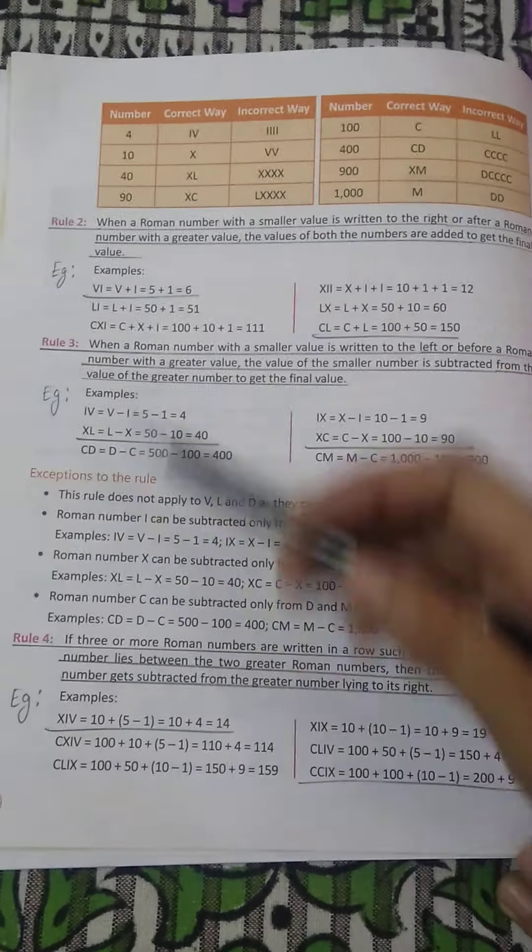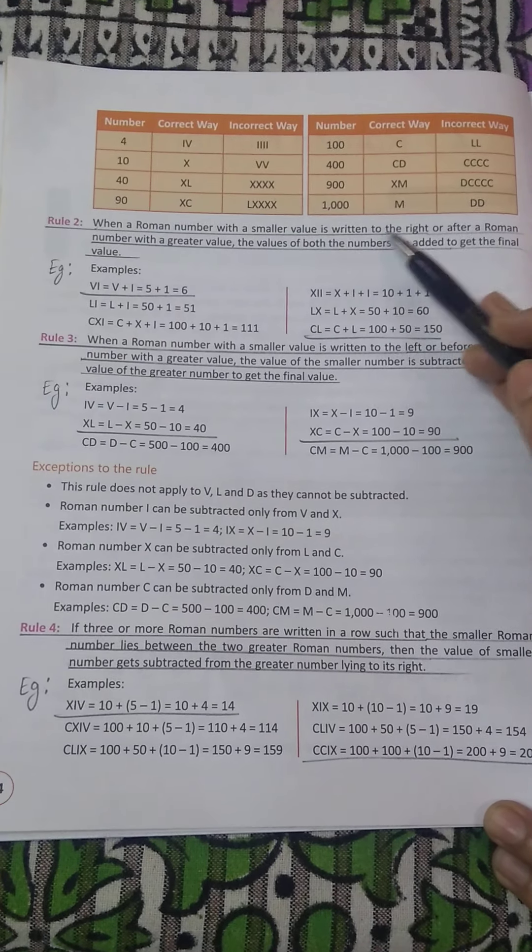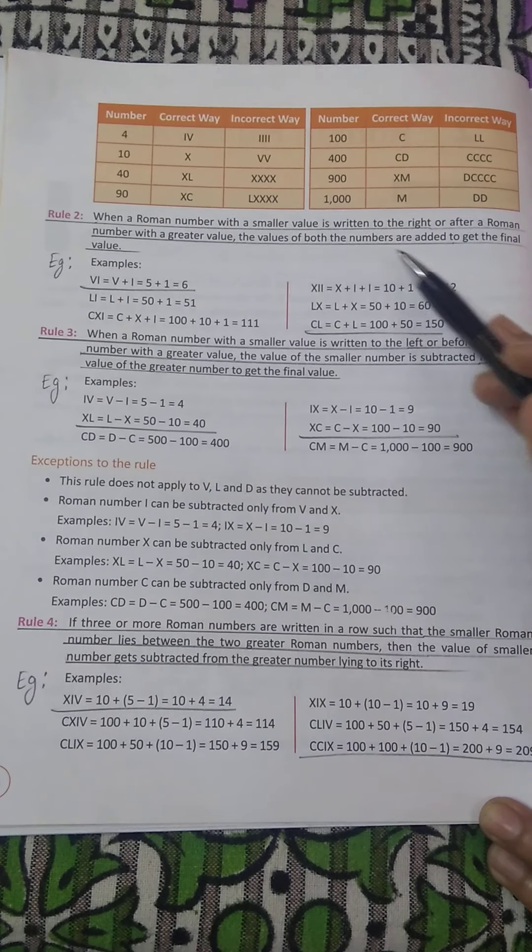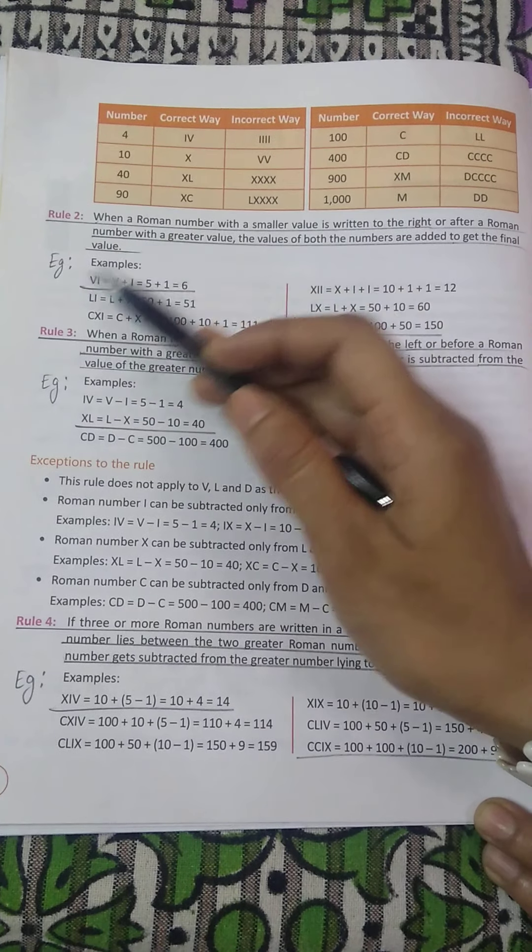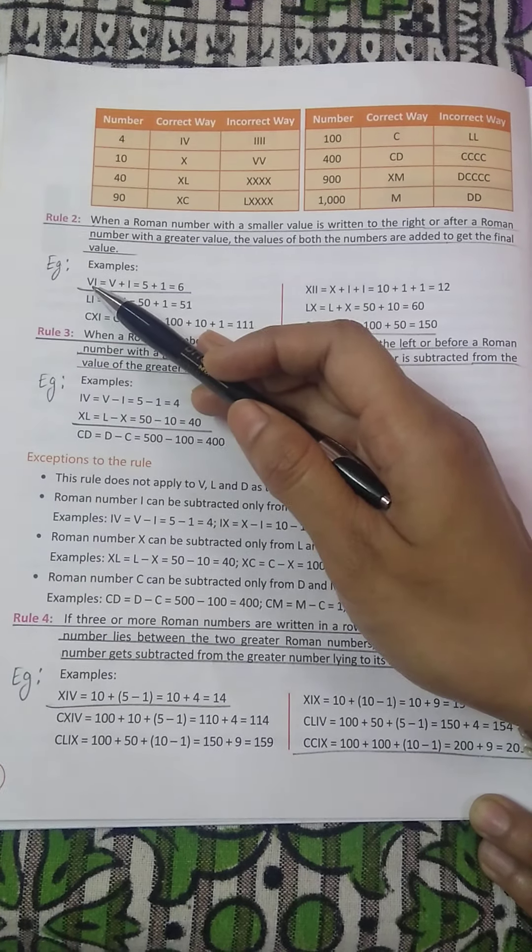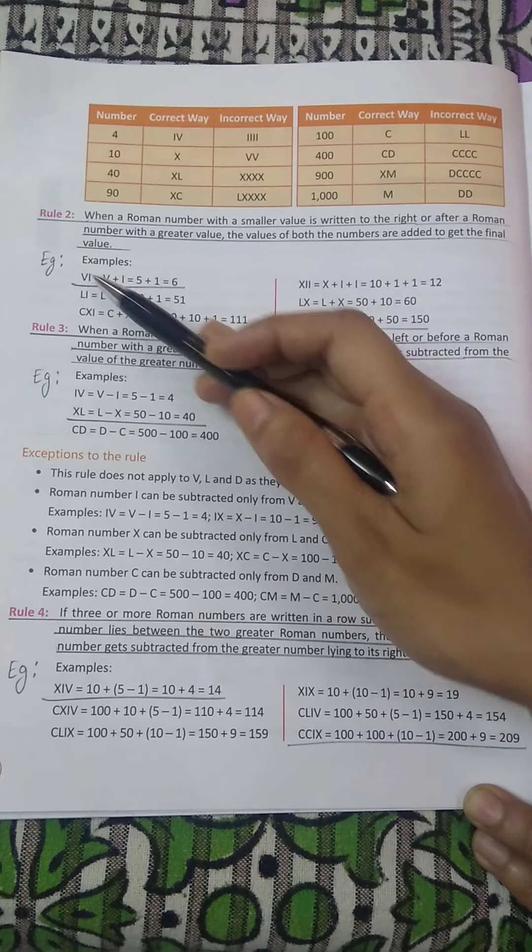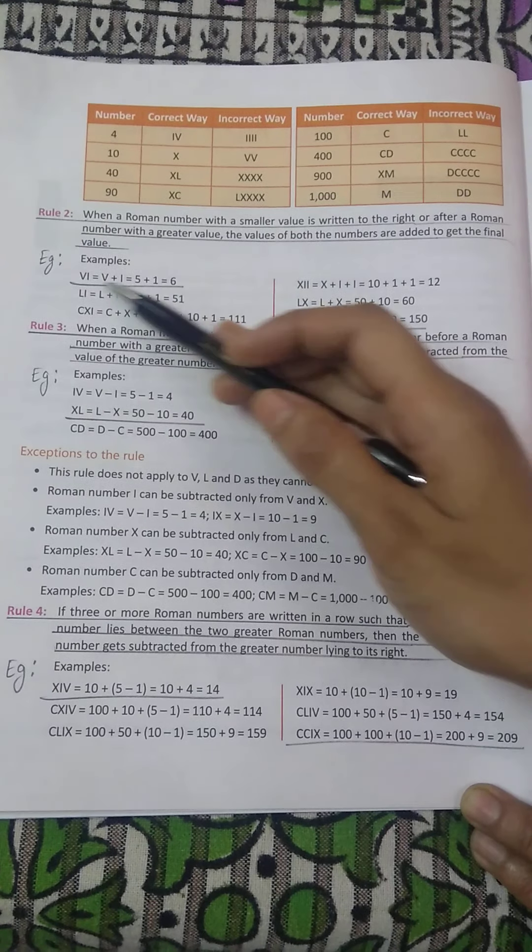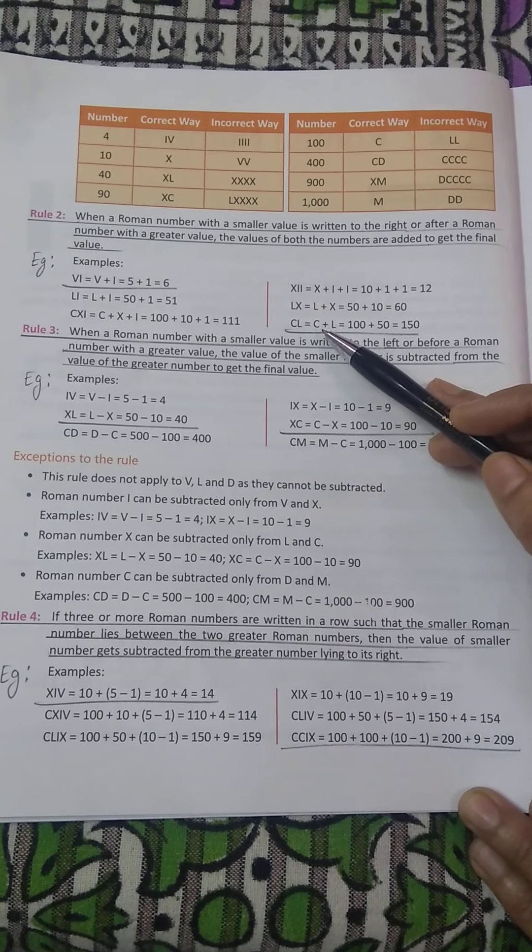After that, turn the page, get the rule number 2. What it is? When a roman number with a smaller value is written to the right or after a roman number with a greater value, the value of both the numbers are added to get the final value. So you are supposed to write the whole sentence. Example, these two are the examples which I have underlined. What it is? VI. V is greater, I is smaller. I is coming to the right hand side of greater roman numeral. So 5 plus 1. What it is? 6. Similarly the next example.